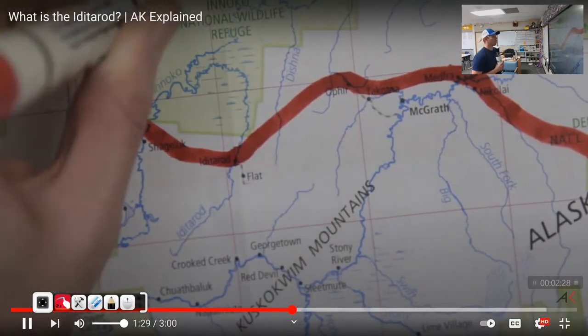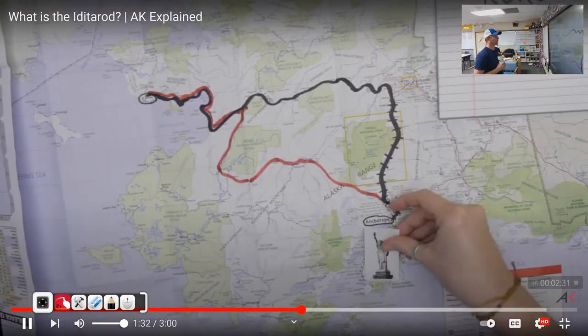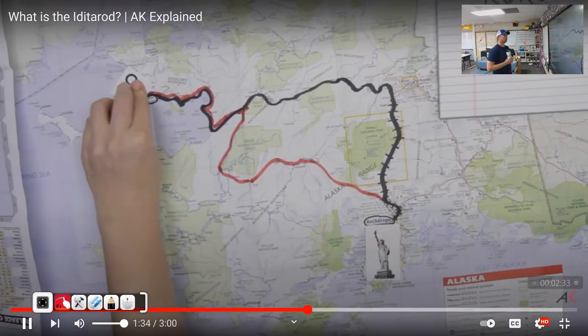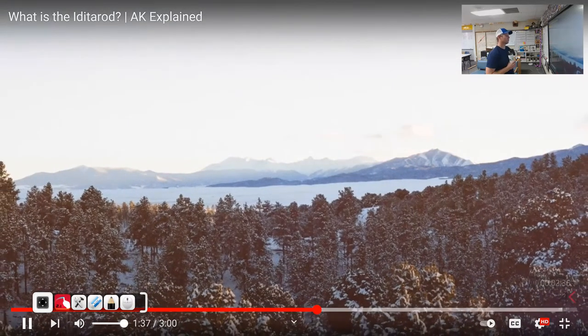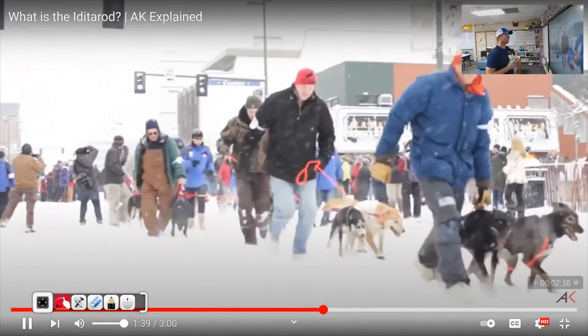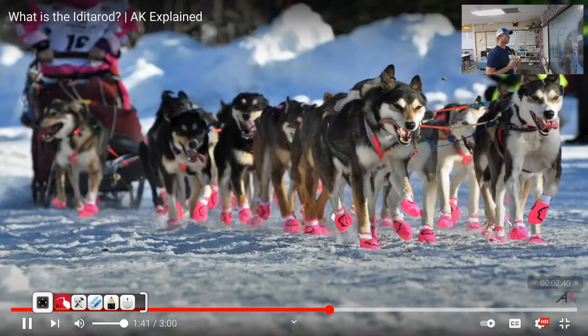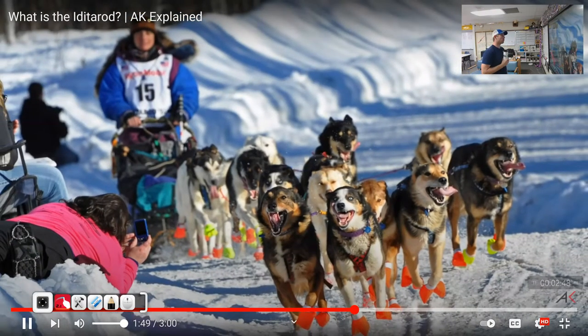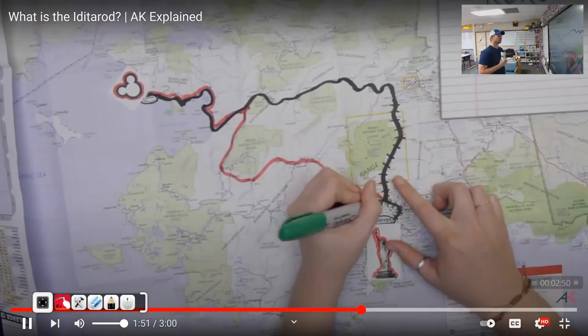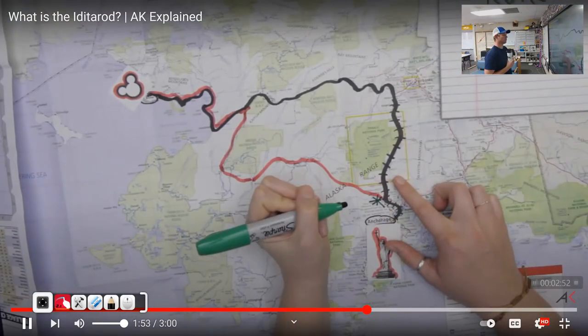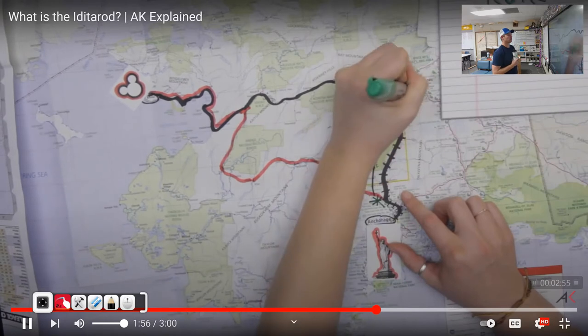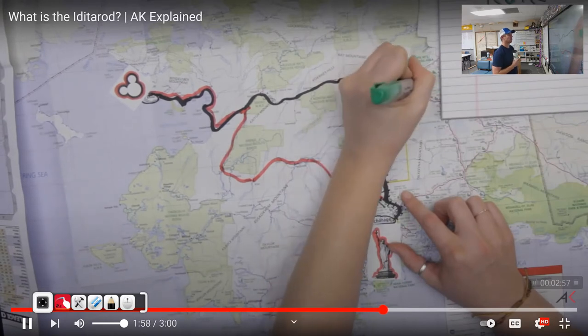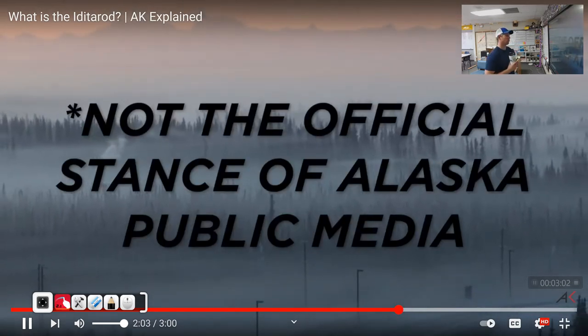But here's the thing. It was a relay, and they actually passed the medicine from dog team to dog team, and no team ran more than 100 miles. The modern race isn't really based on that original run. It's more of an homage to mushing in general, because now the teams travel over 1,000 miles, almost the equivalent of New York to Orlando. And just like everybody else, those dogs are going to be really excited to get out of Fairbanks.